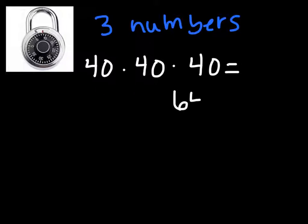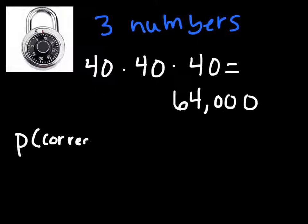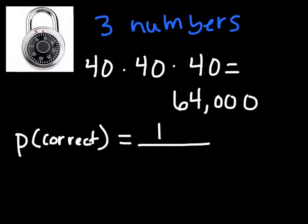Okay, so the probability of the correct combination is, there's only one correct combination, so that's the only possible favorable outcome, and then the possible outcomes are 64,000.